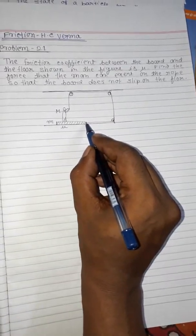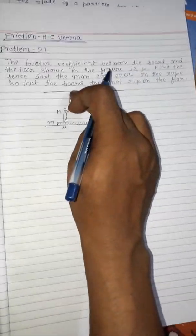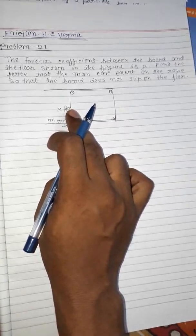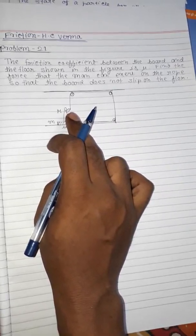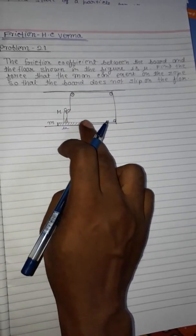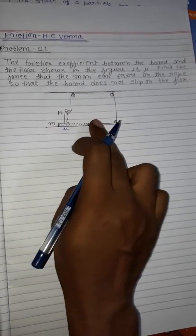Now the rope is connected from here and through these three pulleys to the hand of the man. If the man gives a force on the rope, then the board may slide.